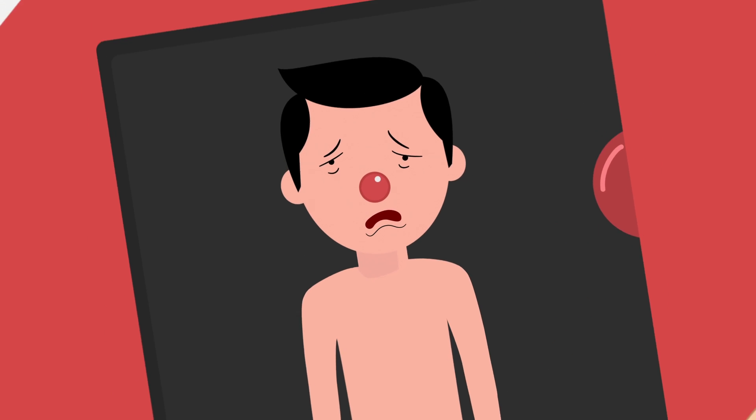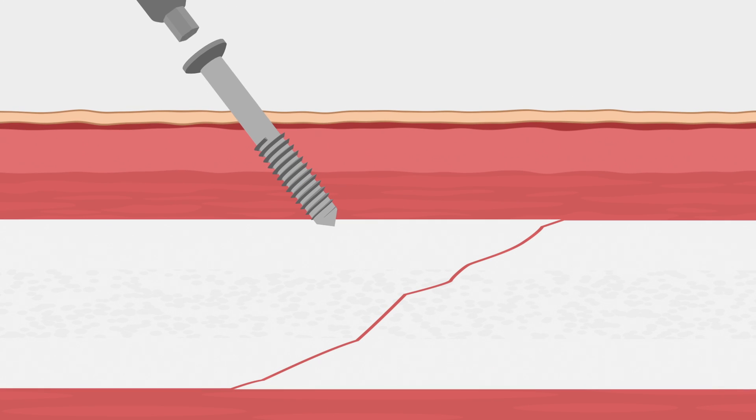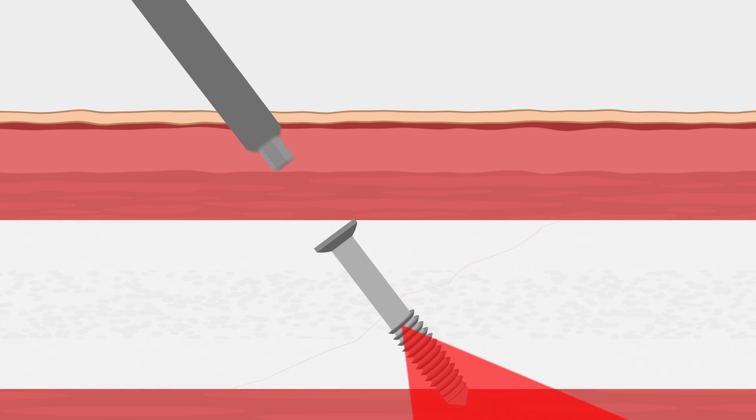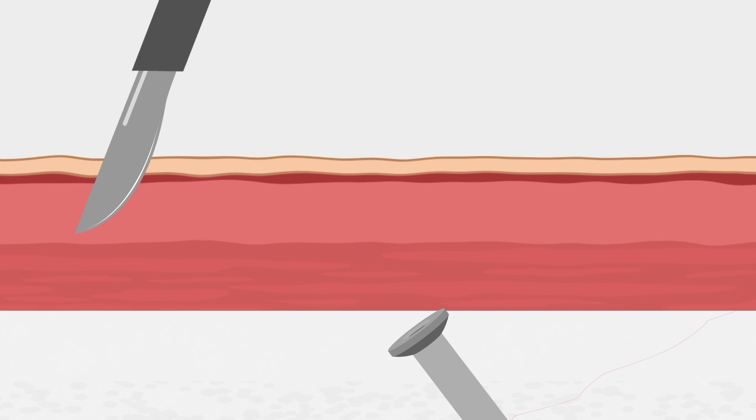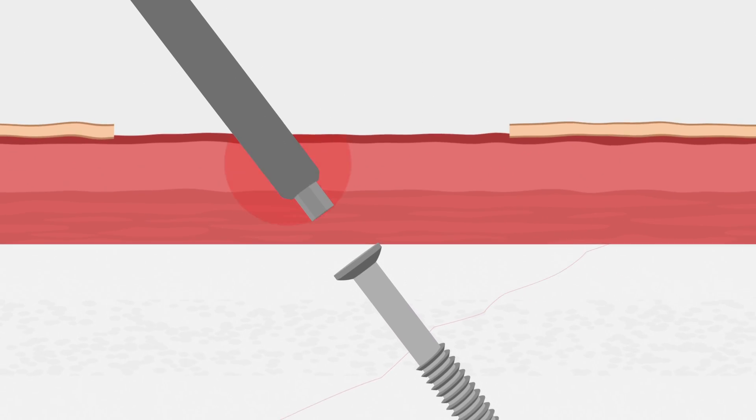This is because conventional bone screws were designed a lot like carpenter screws, which are countersunk into bone. So getting them out is often harder than putting them in, requiring larger incisions and unnecessary trauma.